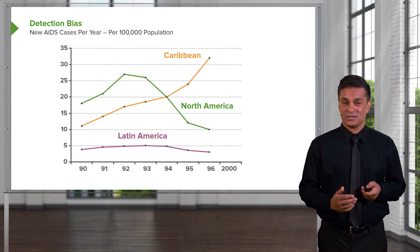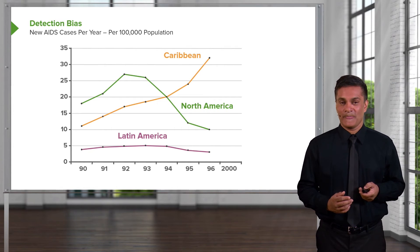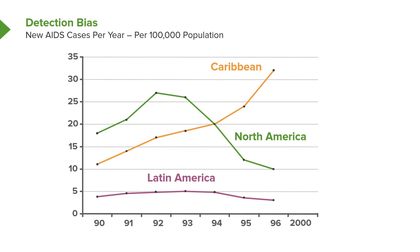My personal favorite is this graph that I show all my students. It shows new AIDS cases per year from 1990 to about 2000 in three different regions: Latin America, the Caribbean, and North America. In North America, new AIDS cases declined in the early to mid-1990s, we think due to new therapies being introduced. In the Caribbean, in the same time period, the number of AIDS cases increased dramatically. And I always ask my students: why was that? Why do you think it went up so dramatically in the Caribbean?